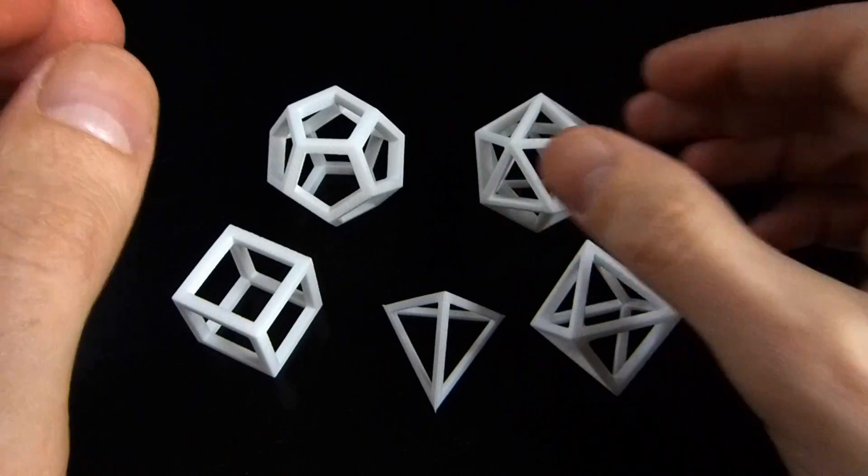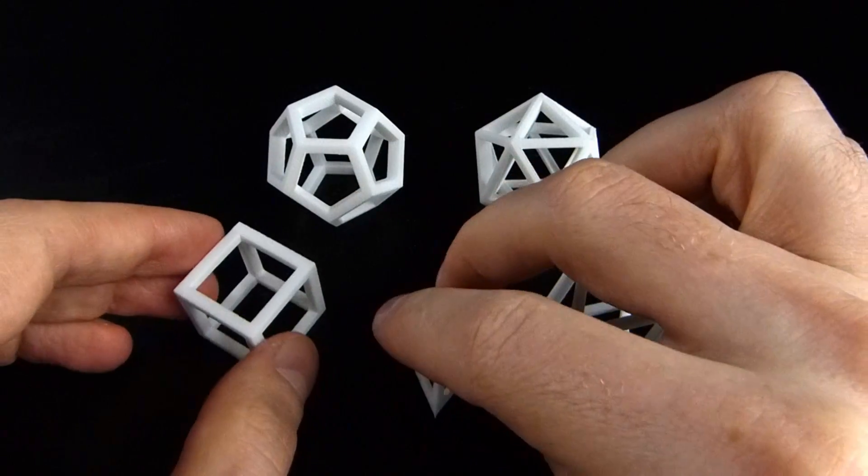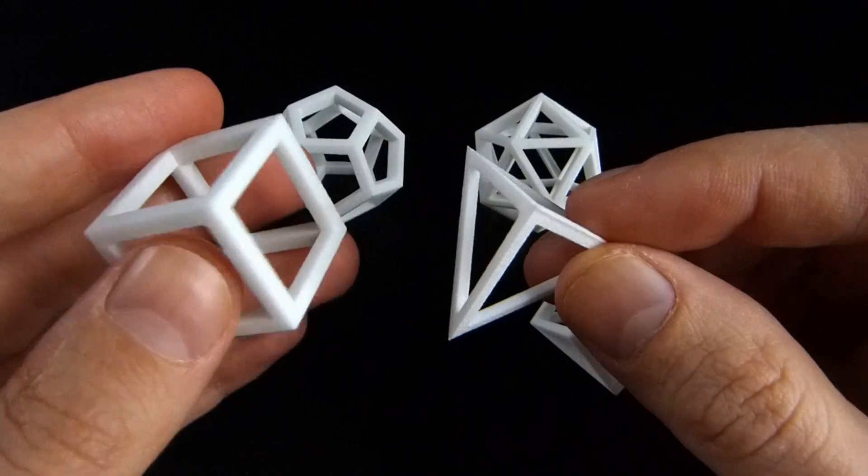And I've chosen the relative sizes of these so that the distance between the centre of the polyhedron and the vertices is always the same.